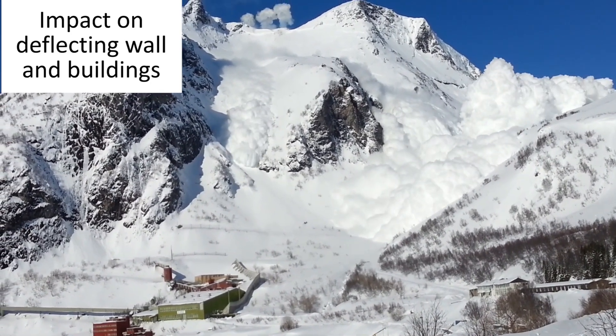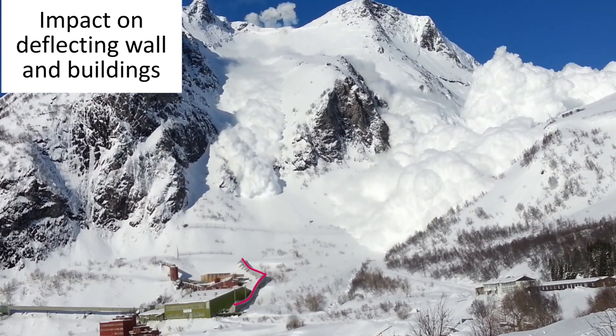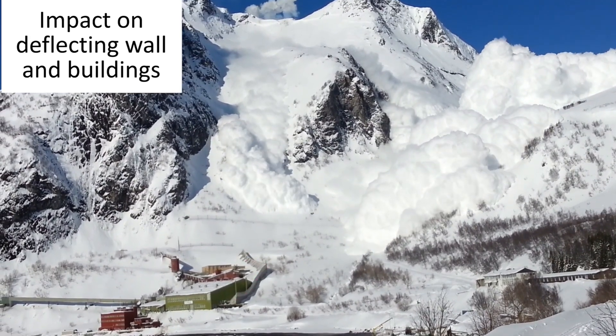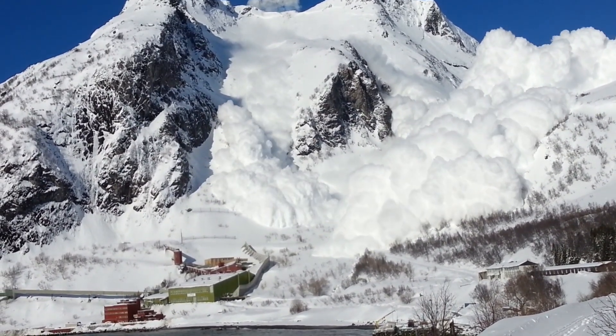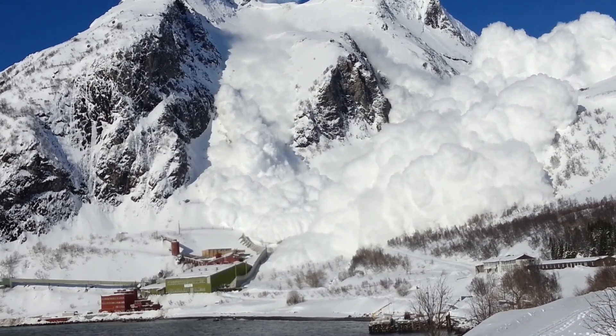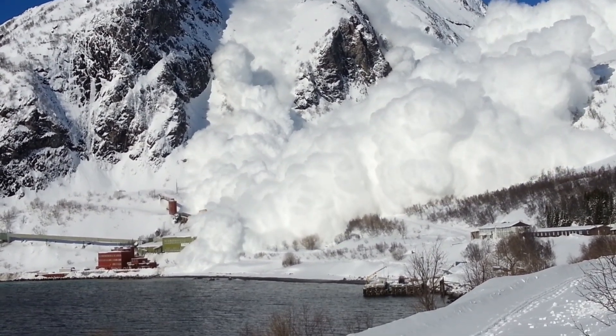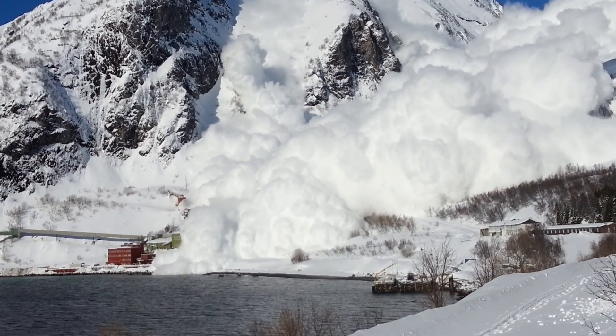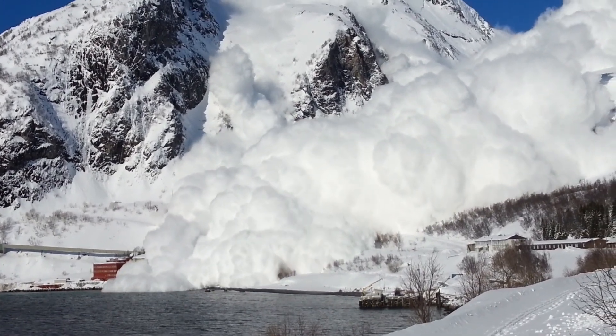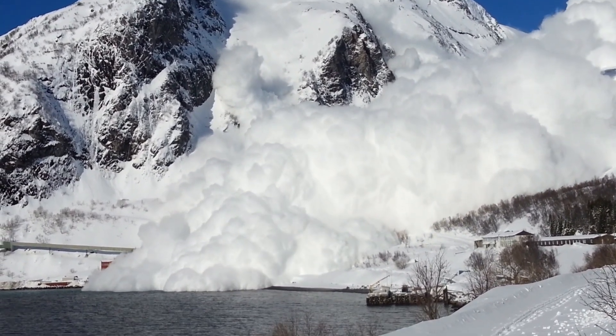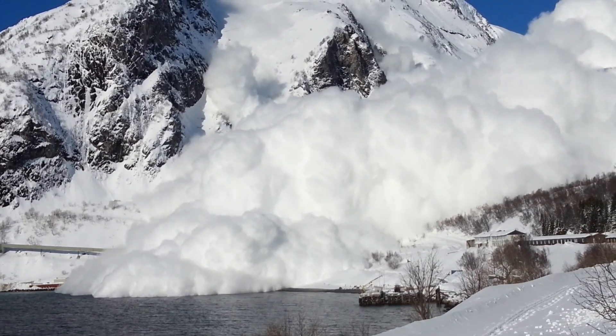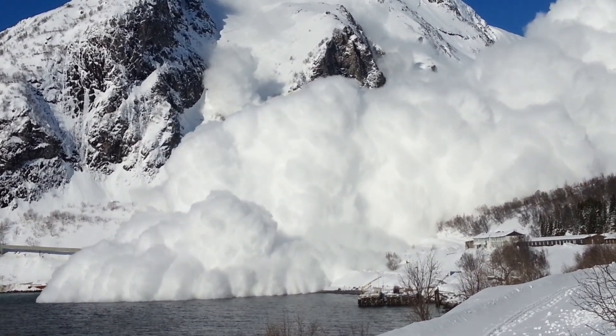In this video of a large dry avalanche, we see the height of the deflecting wall has been designed only for the dense flow, which has the highest impact pressure. The powder layer flows over the deflecting wall and hits the buildings with less impact pressure than the deflected dense flow. However, because of the height of the buildings, the impact force from the powder layer can be substantial.